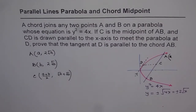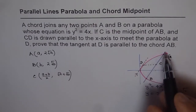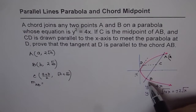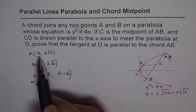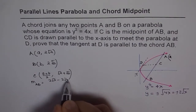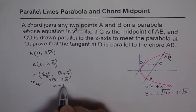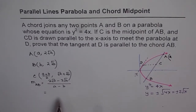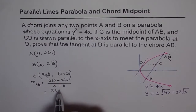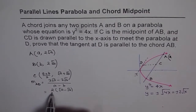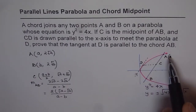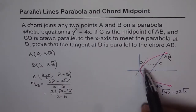Now, what is the slope of AB? The slope M of AB equals y2 minus y1 divided by x2 minus x1. So we write this as 2 square root A minus 2 square root B, divided by A minus B. Taking 2 common, we get 2 times (square root A minus square root B) over (A minus B). That becomes the slope of the secant line AB, and we need to prove that the slope at point D is the same as this.